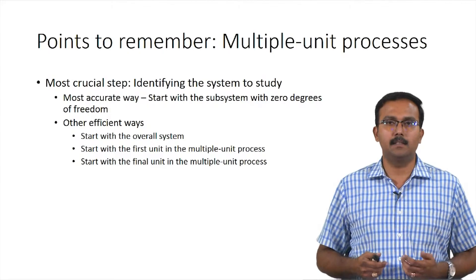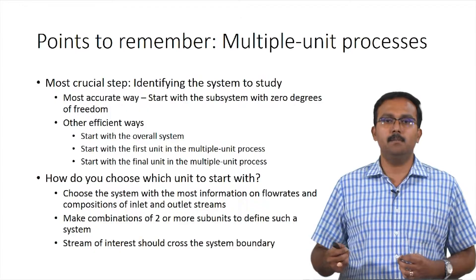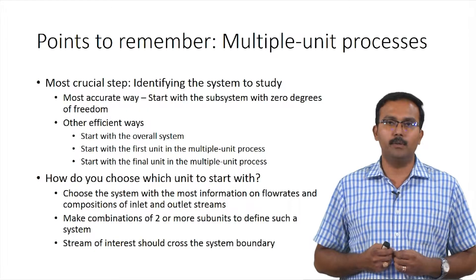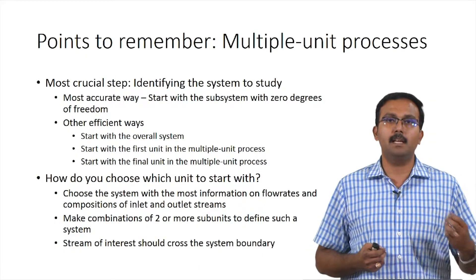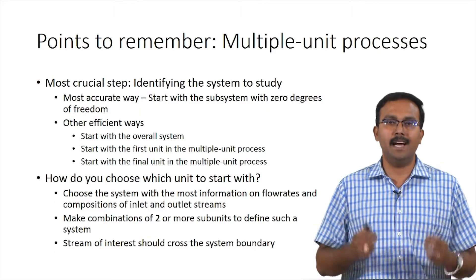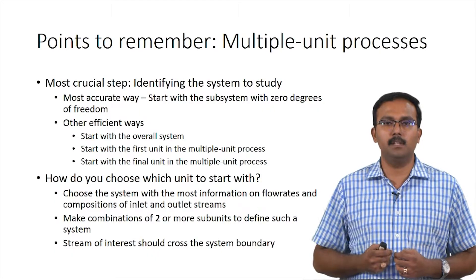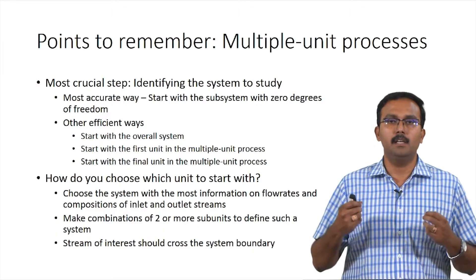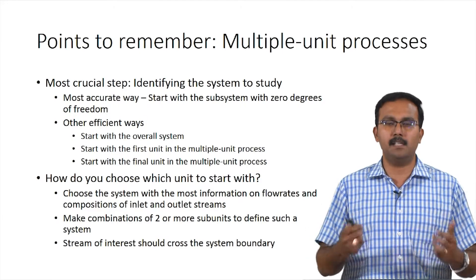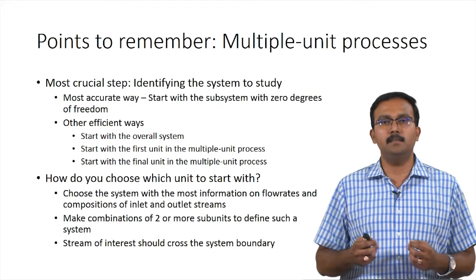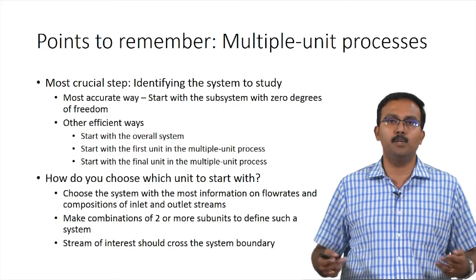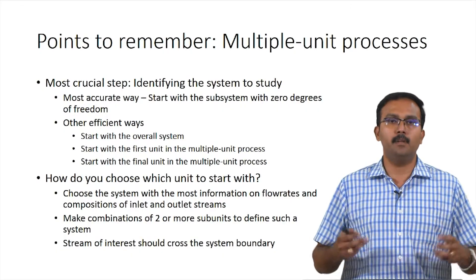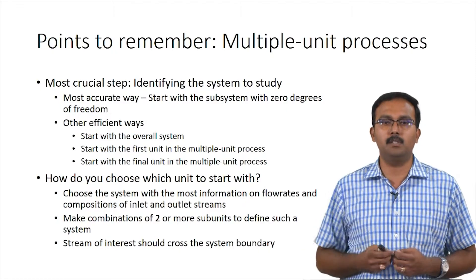Amongst these approaches, you usually choose a system where the most information is available. If a system has more information on flow rates and compositions of streams crossing the system boundary, that is the system to start with — it is likely the one with zero degrees of freedom. If a single sub-unit does not have sufficient information, you would choose a system that is a combination of two or more sub-units, where zero degrees of freedom is satisfied.